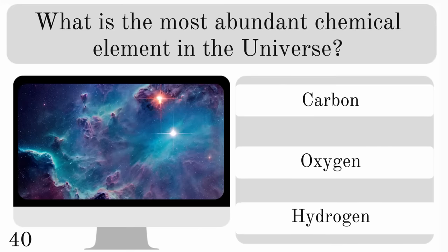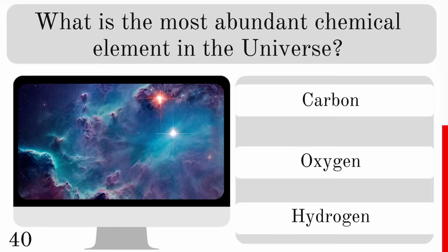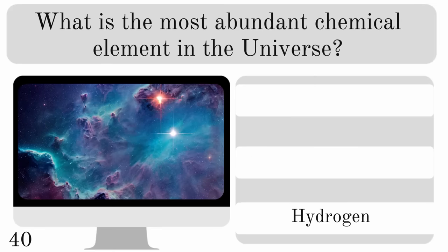What is the most abundant chemical element in the universe? Is it carbon, oxygen or hydrogen? The most abundant is hydrogen.